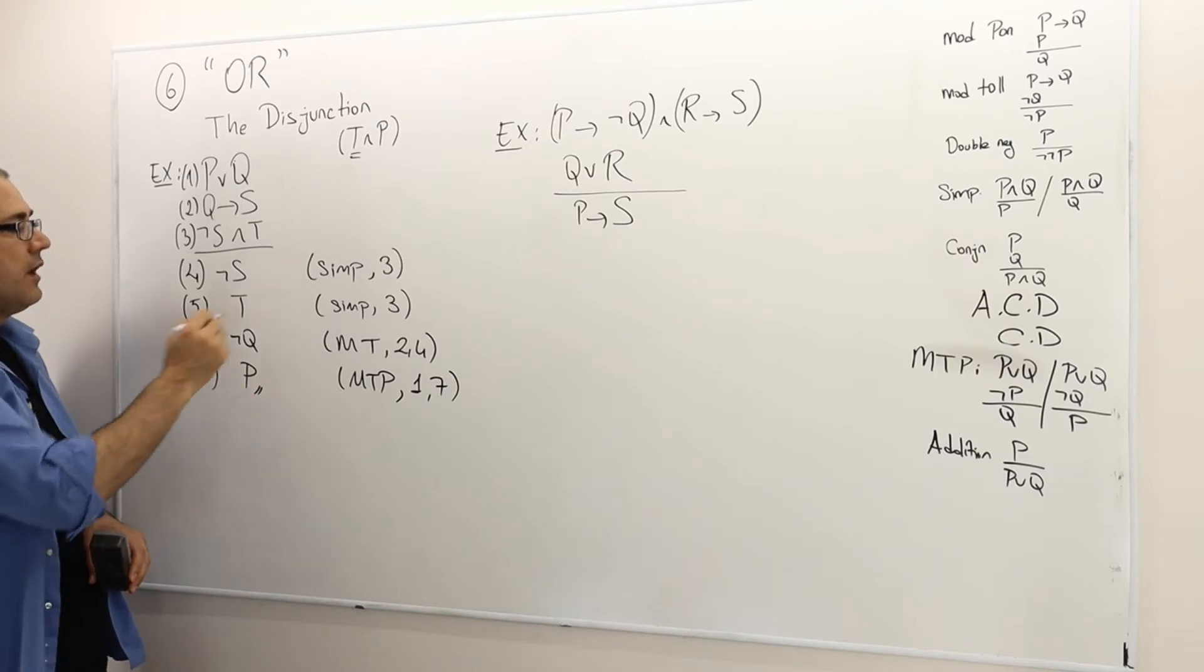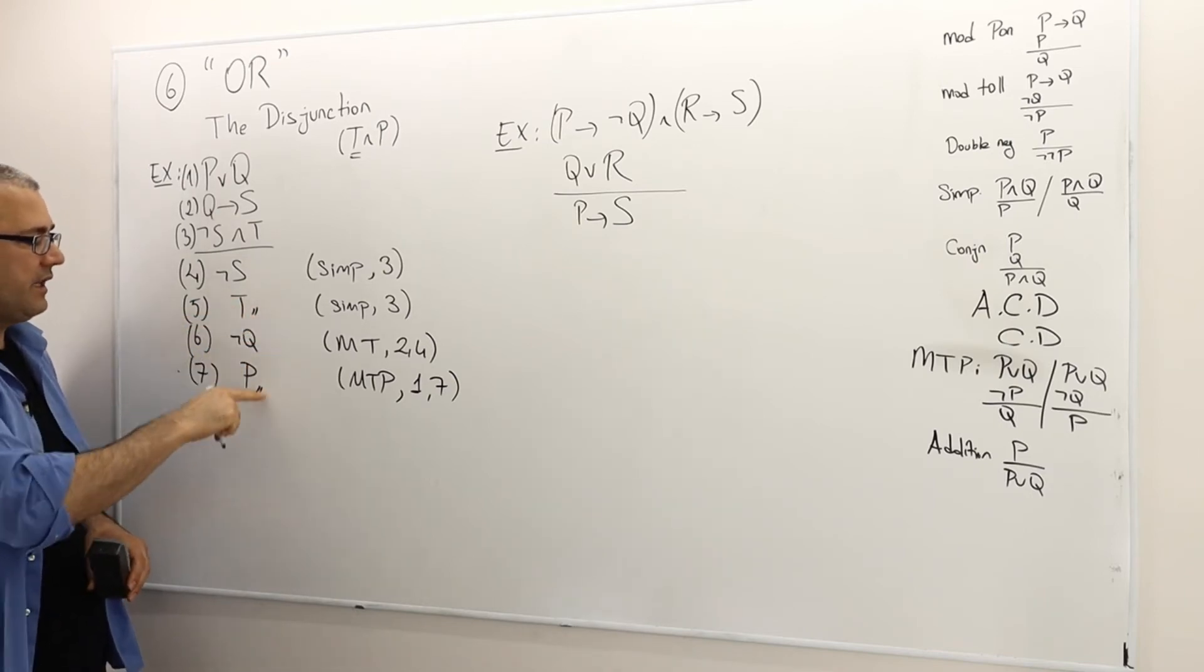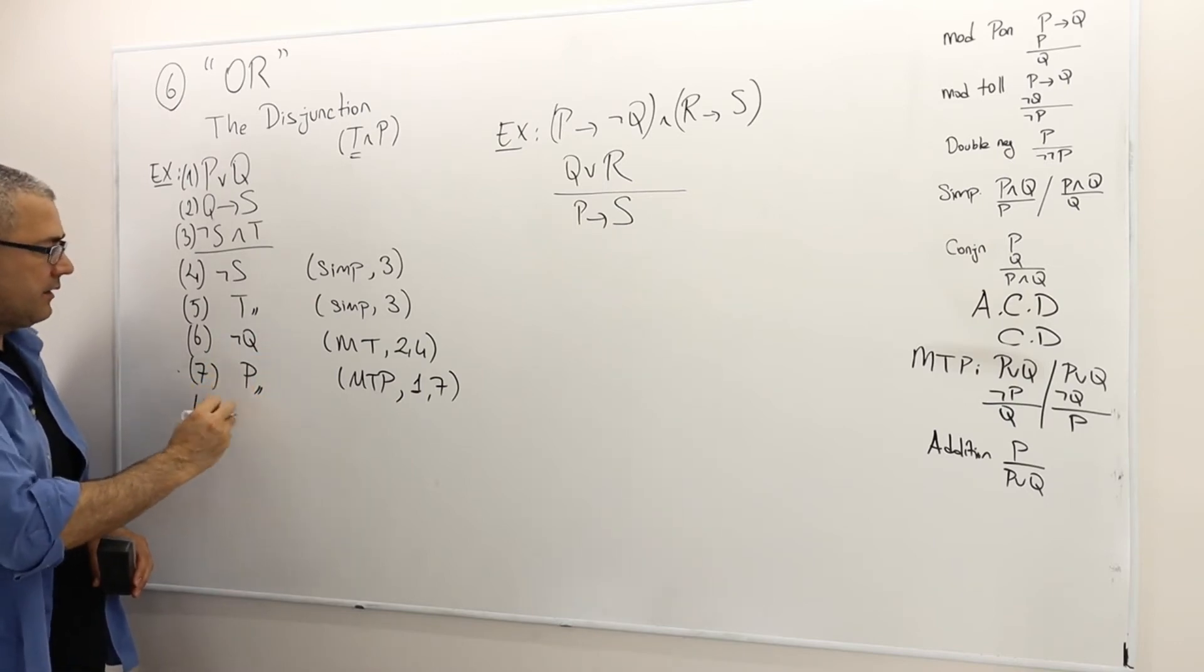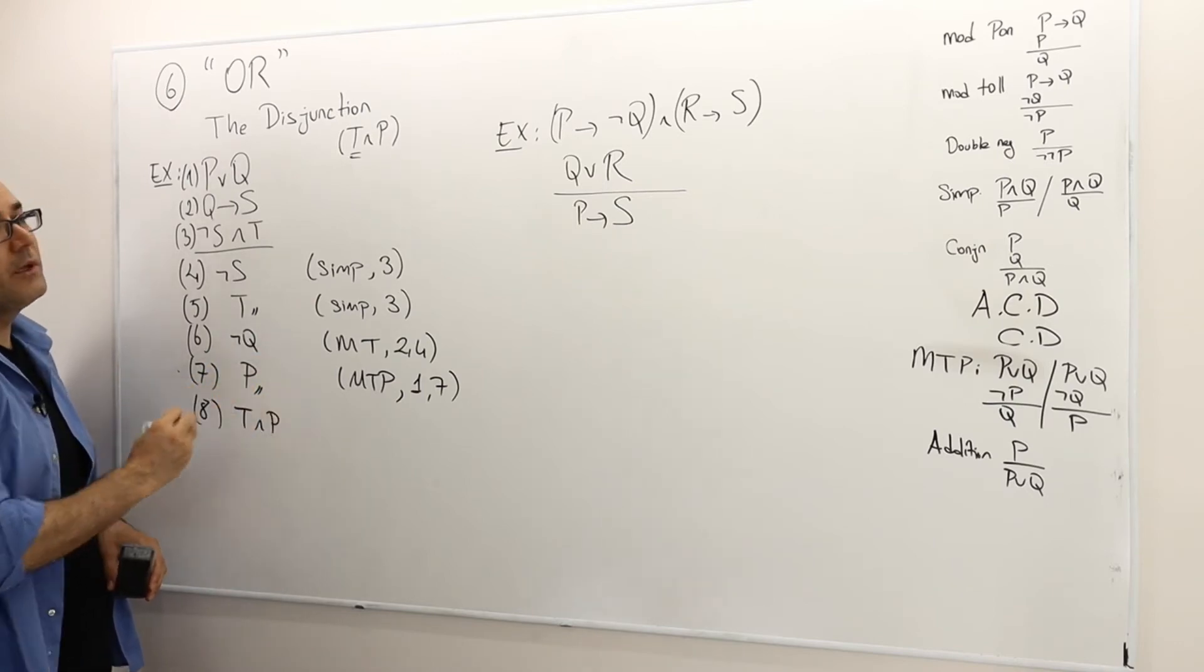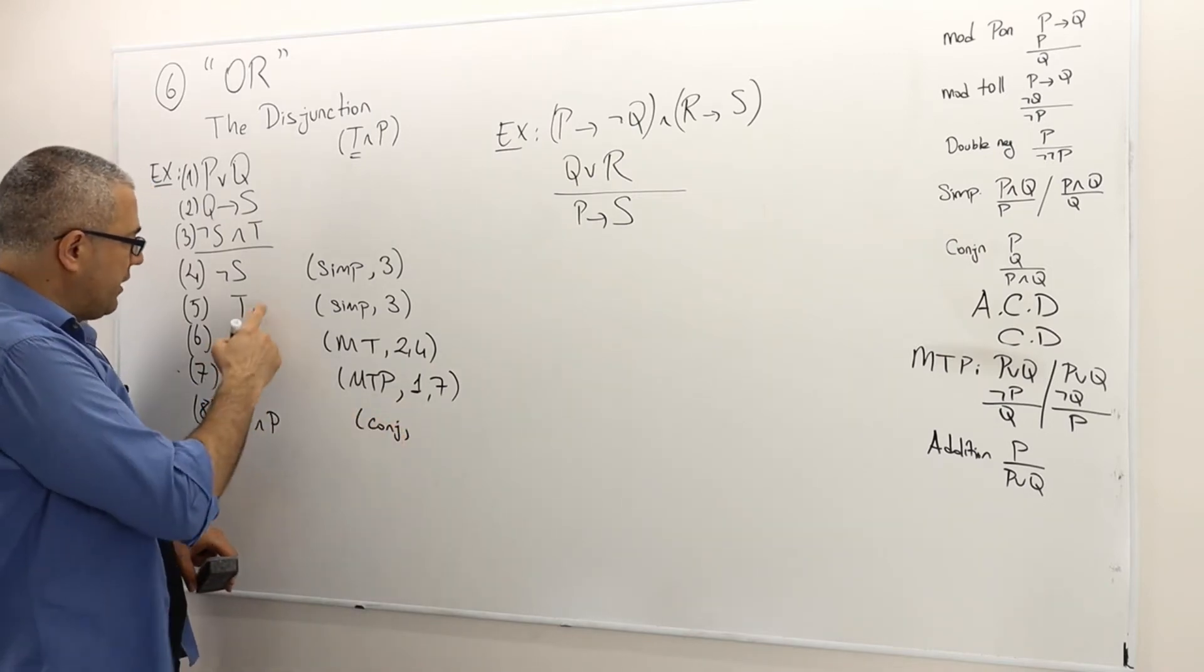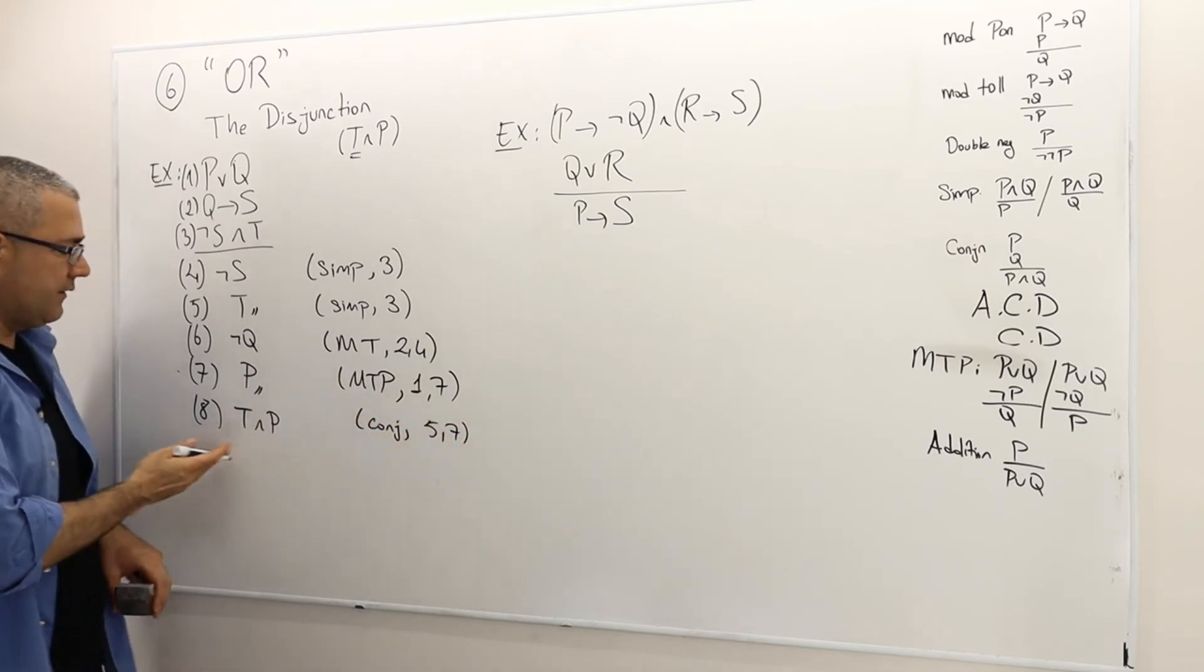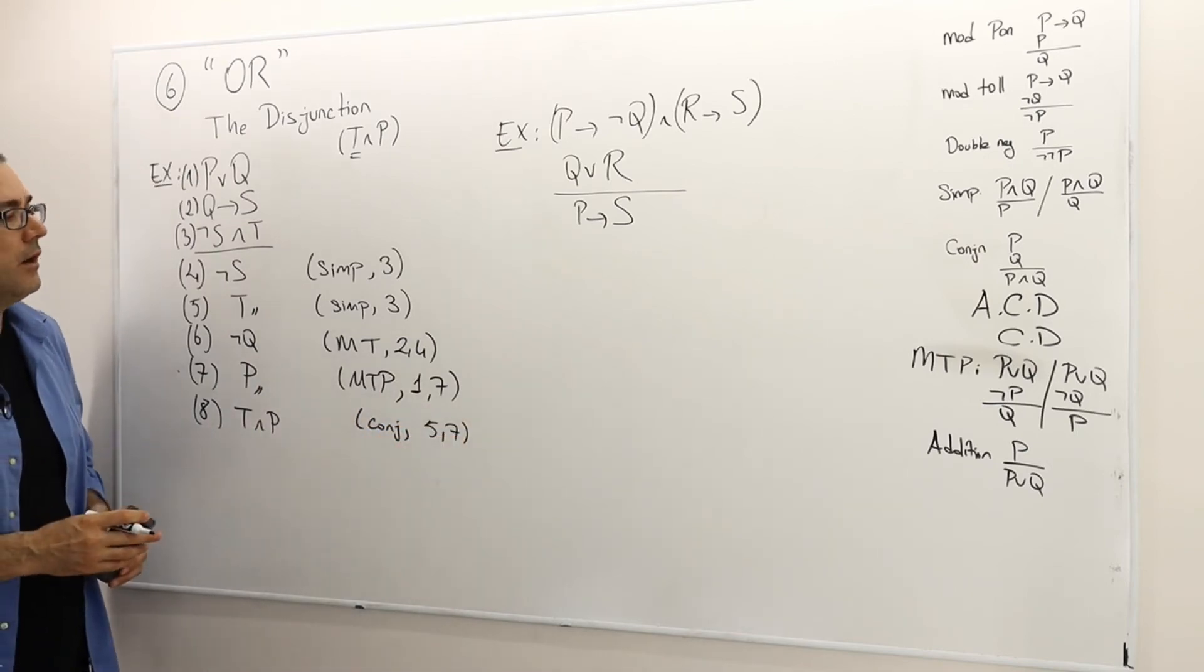I got T as well. I already had T, I now have P. So therefore eight, T and P must be correct. And this is simply the conjunction rule between the arguments five and seven. And that is the conclusion of our proof.